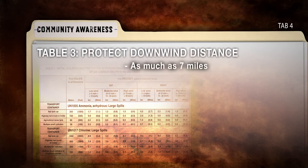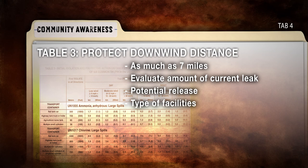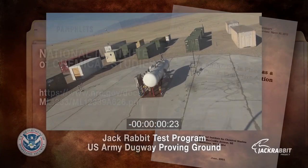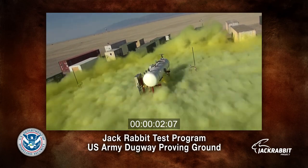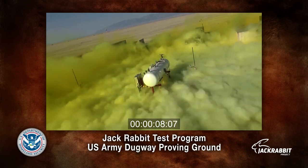In some circumstances, the Protect Downwind Distance in Table 3 is as much as seven miles. During any incident, much care should be taken to evaluate the amount of the current leak, if any, the potential release — for example, if a rail car is loaded or residue — and the type of facilities in the area. Evacuating ambulatory patients in a hospital or nursing home can do more harm than good. Additional information on sheltering in place can be secured from the National Institute of Chemical Studies, located in Charleston, West Virginia. Recent Department of Homeland Security chemical dispersion tests on chlorine have indicated that even large releases do not follow current dispersion model footprints.